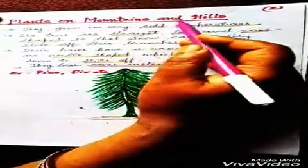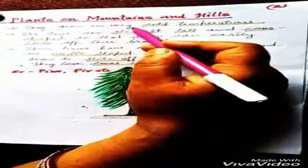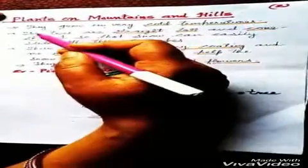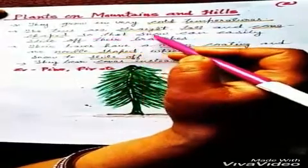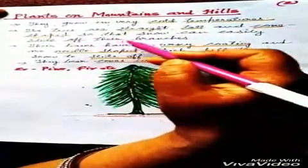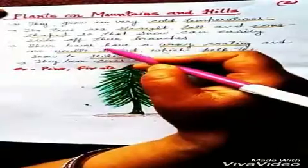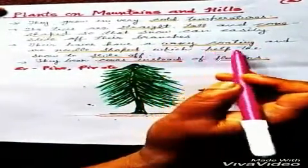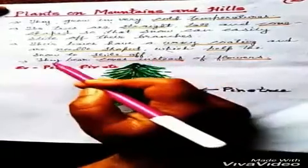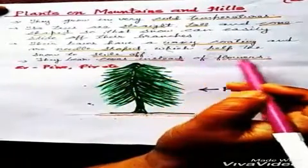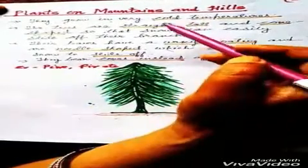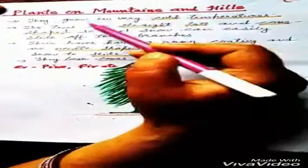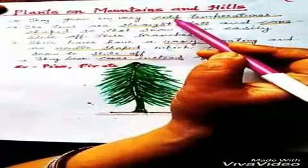Next are plants on mountains and hills. They grow in very cold temperatures. The trees are straight, tall and cone-shaped so that snow can easily slide off their branches. Their leaves have a waxy coating and are needle-shaped, which also helps the snow to slide off. They bear cones instead of flowers. For example, pine trees.